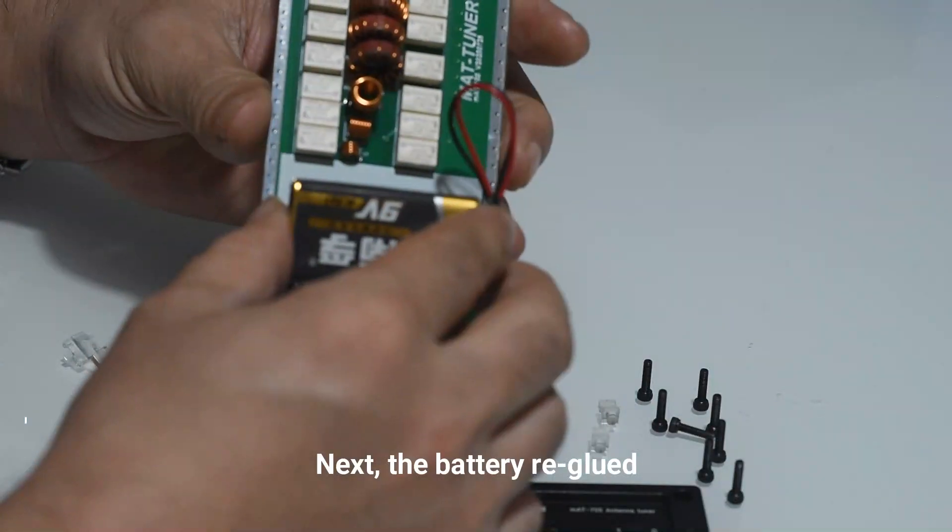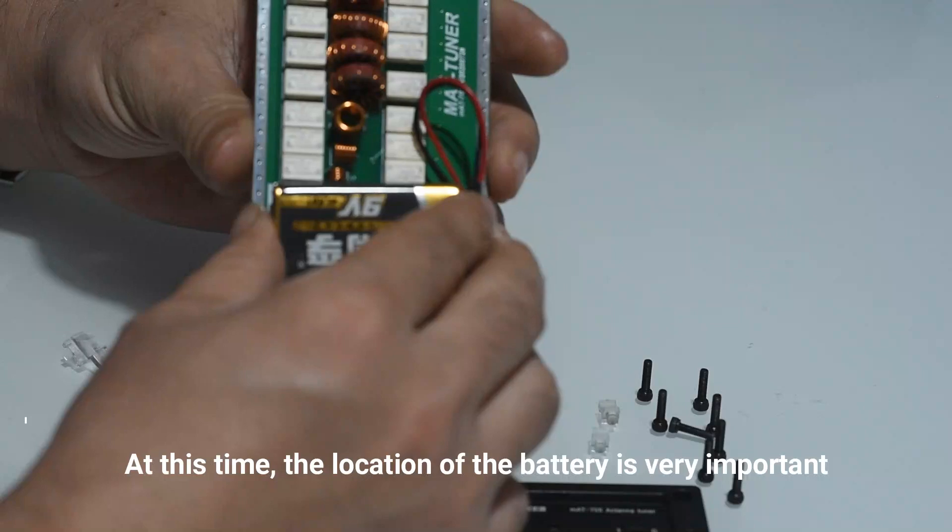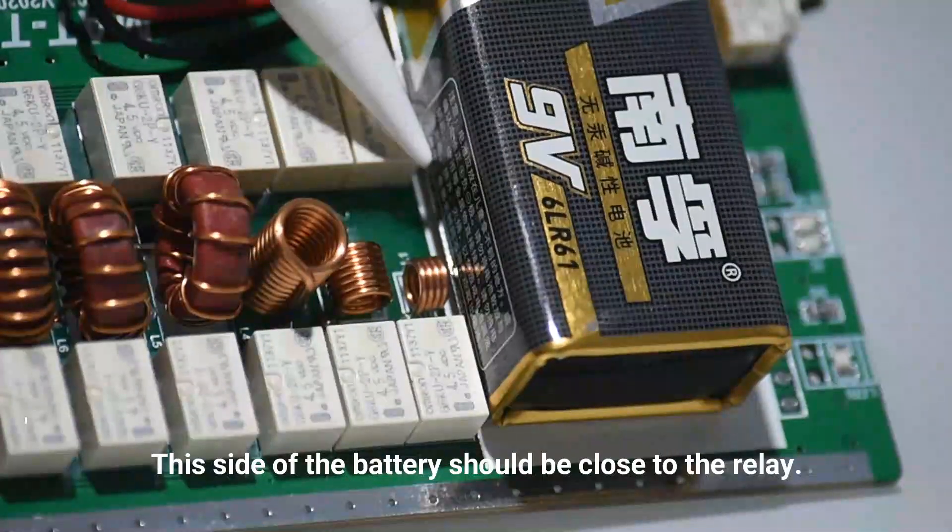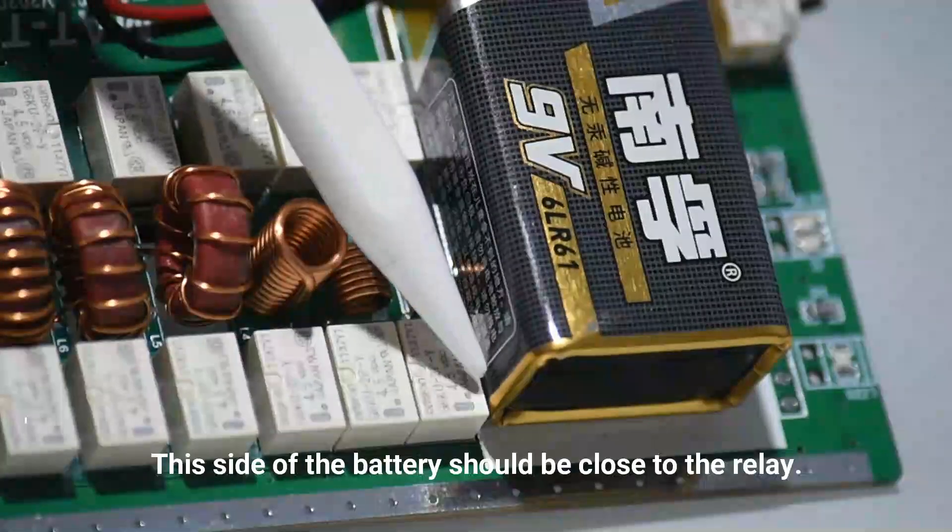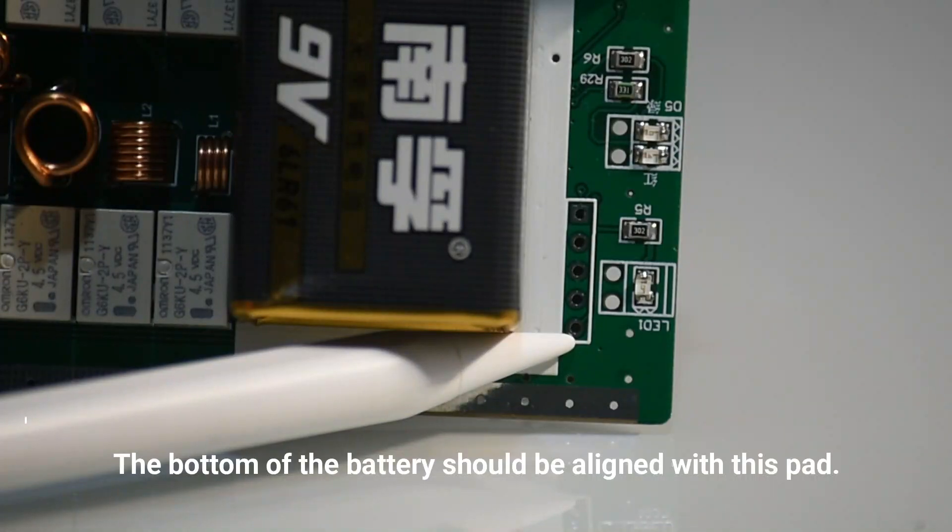Next, attach the battery to the PCB, making sure that you align the battery as shown in the video. It needs to be touching the relays and aligned with the PCB markings here.